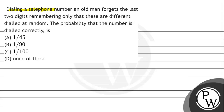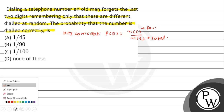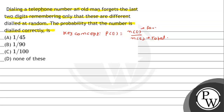The question says: dialing a telephone number, an old man forgets the last two digits, remembering only that these are different. Dialing at random, what is the probability that the number is dialed correctly? The key concept for this question is: probability of event E is n(E) by n(S), where n(E) is number of favorable outcomes and n(S) is total possible outcomes. यह हमारे पास probability निकालने का तरीका होता है।